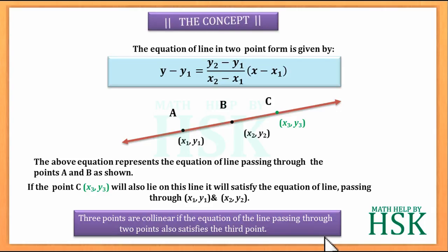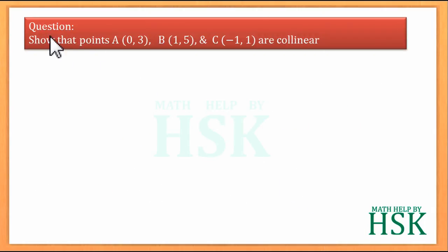Now we shall take an illustration. Show that points A (0, 3), B (1, 5), and C (-1, 1) are collinear. Let points A be equal to X1, Y1, point B be equal to X2, Y2, and point C be equal to X3, Y3.